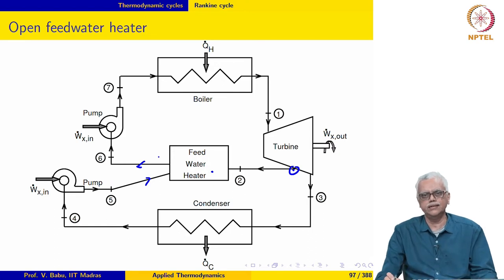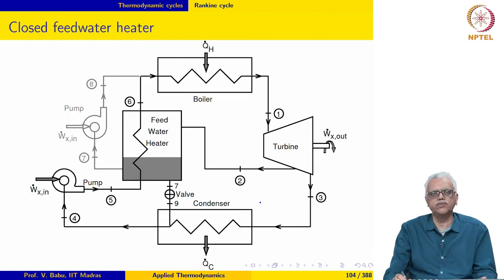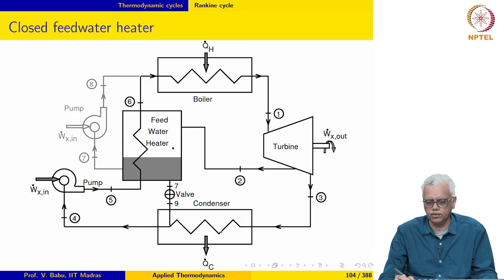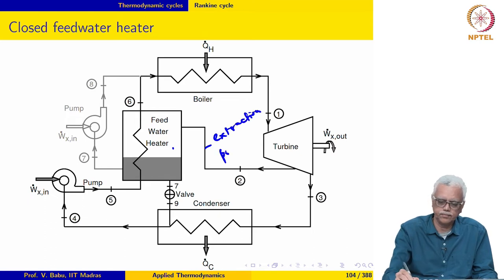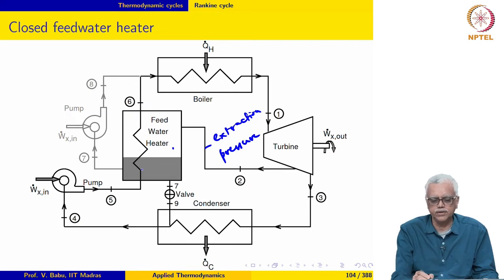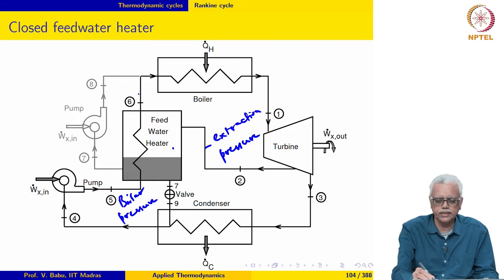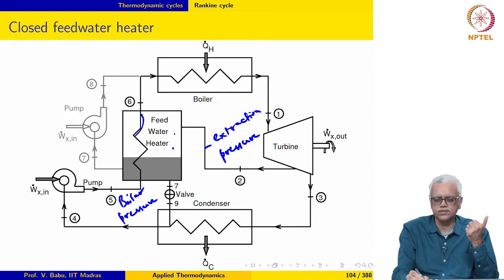This is a requirement because all the streams are being mixed physically in the feed water heater. In contrast, in a closed feed water heater, the pressure of the different streams can be different from each other. As before, part of the steam is extracted from the turbine at extraction pressure. The feed water that enters the feed water heater is at the boiler pressure, not the extraction pressure. It goes through a separate path and never mixes with the steam extracted from the turbine, so it can be at a different pressure.